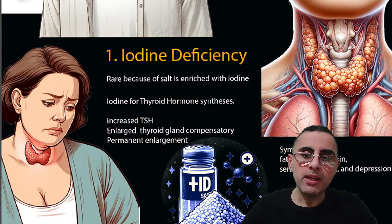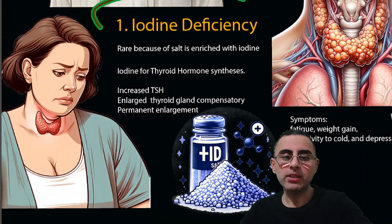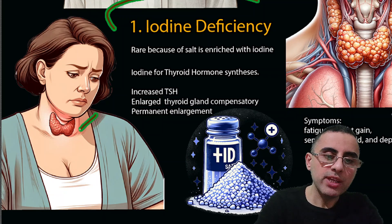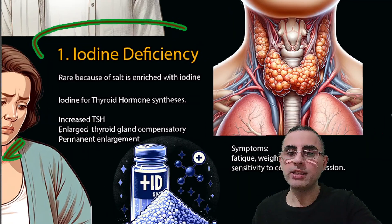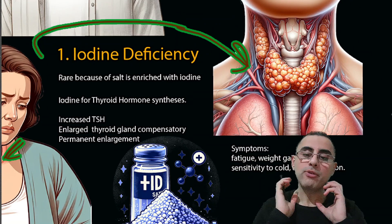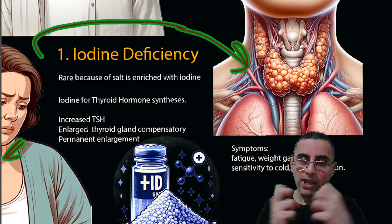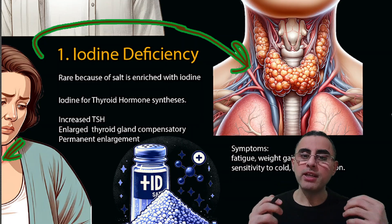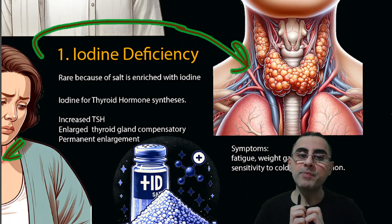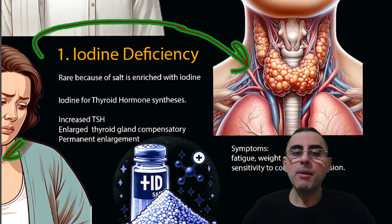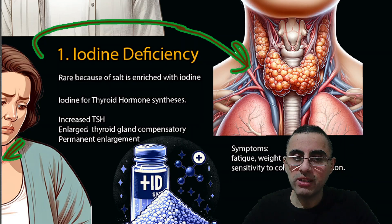The most common cause of goiter is iodine deficiency, especially historically. Iodine is important to produce thyroid hormones. When there is iodine deficiency, the brain tries to stimulate the thyroid gland, and the thyroid gland enlarges to get more blood and more iodine from that blood to synthesize hormones. The more deficiency we have, the more stimulation and the more enlargement.